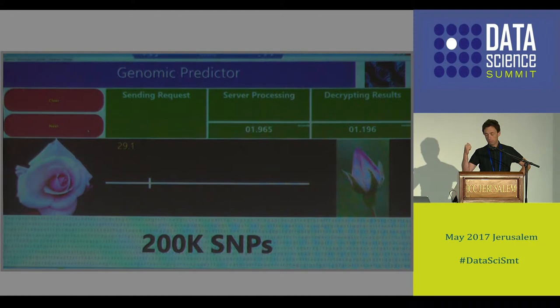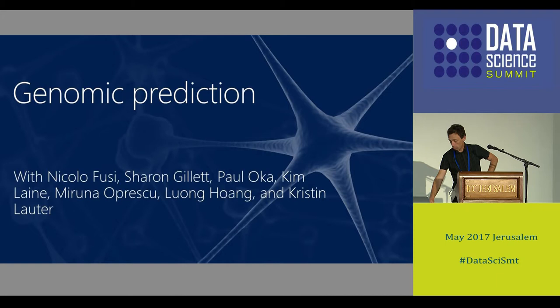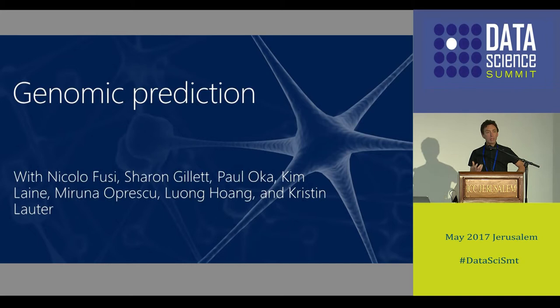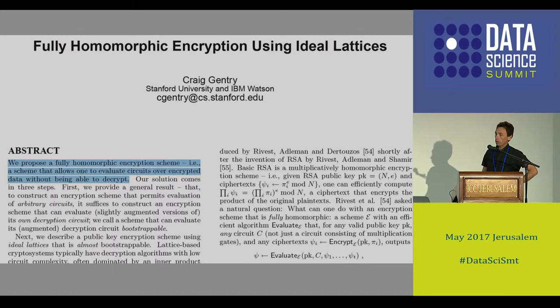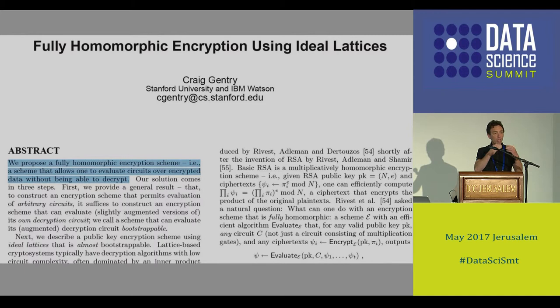So let's talk about what's under the hood. The secret sauce here is an encryption type called homomorphic encryption. It's a type of encryption that people in the crypto community were looking for for many decades, and Craig Gentry in 2009 managed to demonstrate the first implementation of this type of encryption.